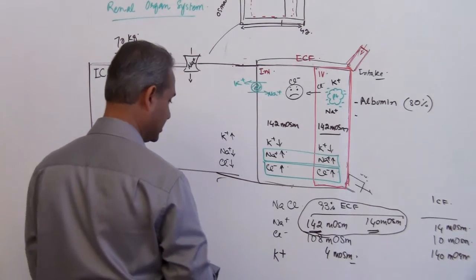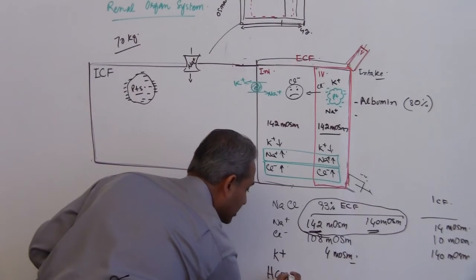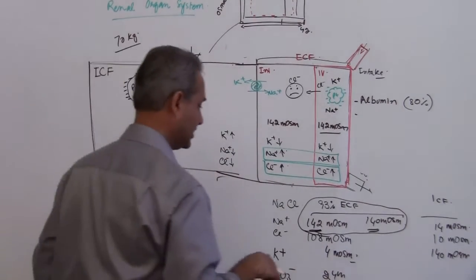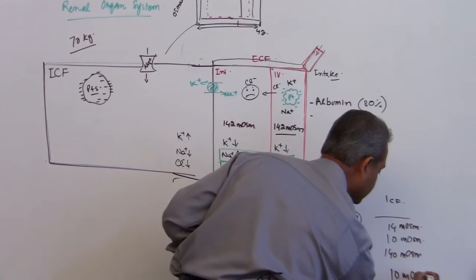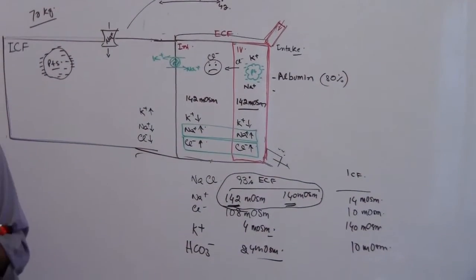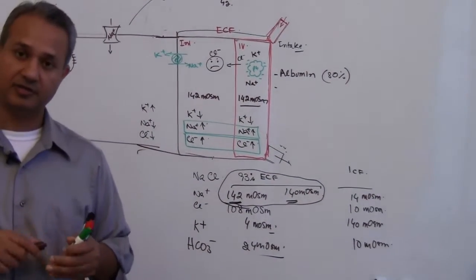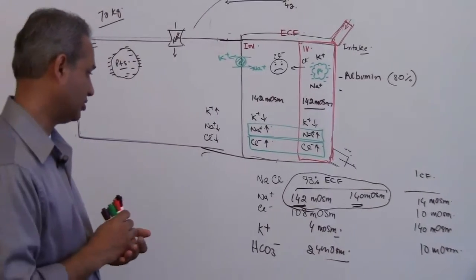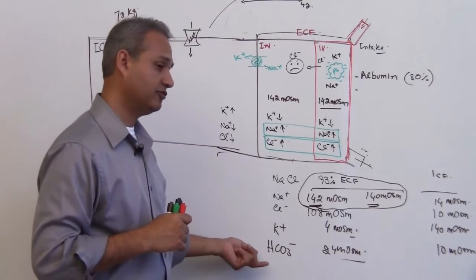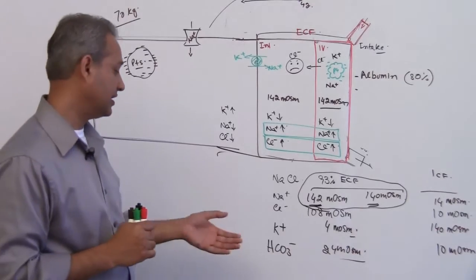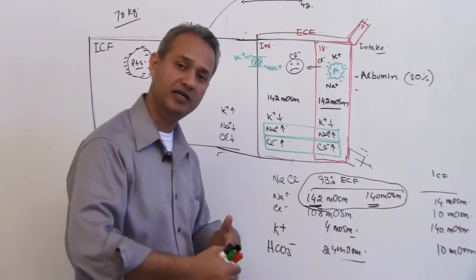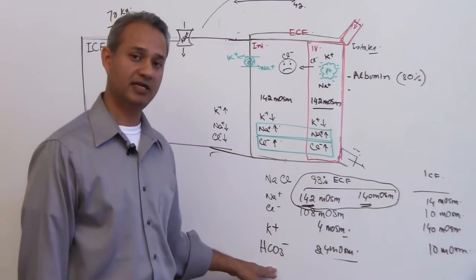We have bicarbonate — about 24 milliosmoles outside and about 10 milliosmoles inside the cell. Bicarbonate is a very important anion. It does not have a great contribution to osmolarity, but it is a big player when we come to acid-base balance.